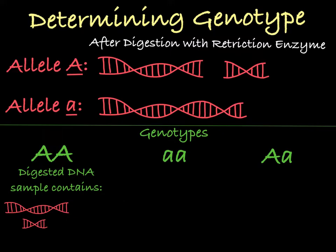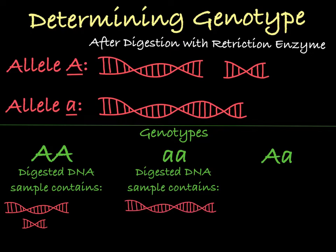Someone with the genotype little a, little a only has versions of the gene that do not have the restriction site, and therefore do not get cut by the restriction enzyme. A DNA sample from this person will have single, larger fragments of DNA.